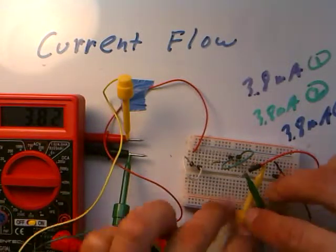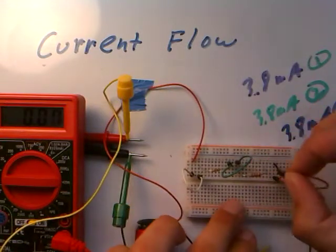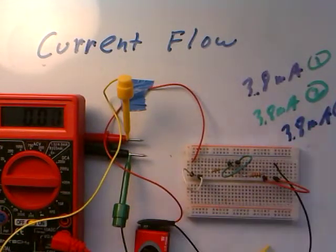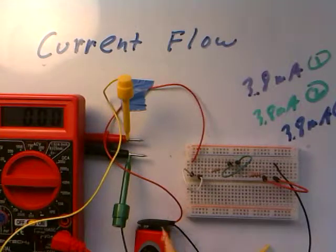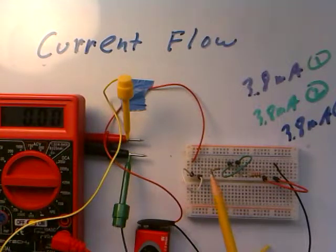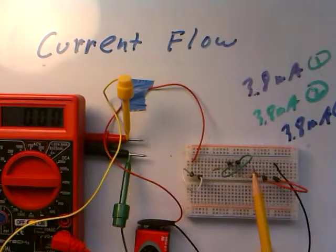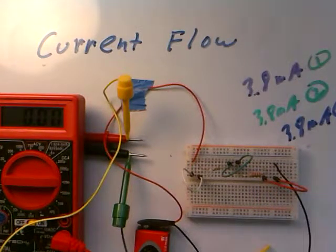So at all three of these points here in the circuit, I got the same current, 3.8 milliamps. So it appears as if 3.8 milliamps is flowing directly out of the battery, out of the first resistor, into the second resistor, and even out of the second resistor and back around to the battery. So 3.8 milliamps throughout.